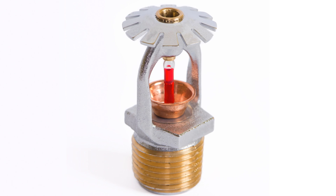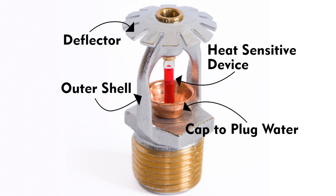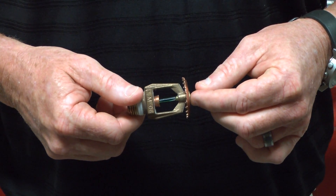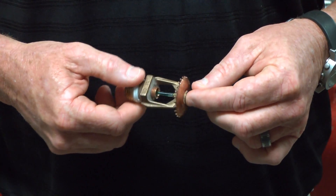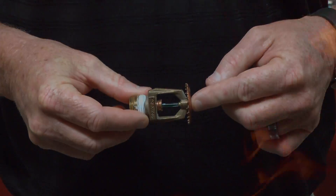The sprinkler head is the central nervous system of a sprinkler system and the part everyone is probably most familiar with. There are many different types of sprinkler heads, but they all share the same components: an outer shell, a cap to plug the water when not in use, a heat sensing device, and a deflector that allows the water to make a cone-shaped spray. In most systems, individual sprinkler heads are triggered by a heat sensitive device built into the head.